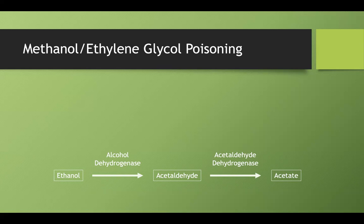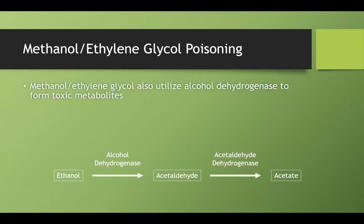Some people ingest methanol or ethylene glycol — usually in the setting of attempted suicide, alcohol use disorder without access to alcohol, or accidentally by a child. If either is ingested, they use the same alcohol dehydrogenase enzyme to form a toxic metabolite, so it's actually safer to keep it in the methanol or ethylene glycol form.